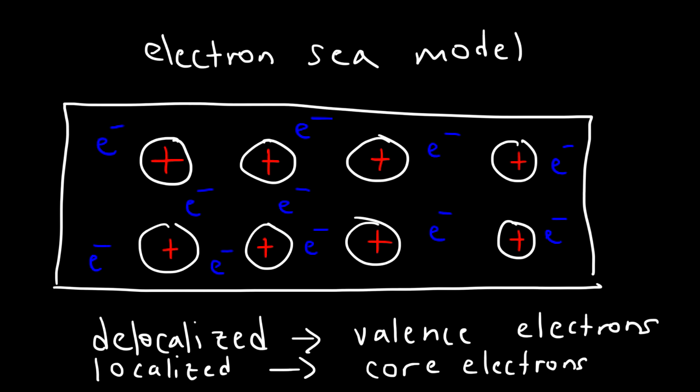For example, the reason why salt water conducts electricity is because you have free-flowing sodium and chloride ions. The sodium has a positive charge and the chloride has a negative charge, but in water they're free to move — that's why salt water conducts electricity. In a metal, we have free-flowing electrons, and that's why metals conduct electricity.